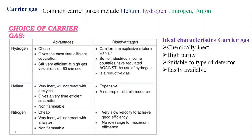The ideal characteristics of a carrier gas: it should be chemically inert, so it will carry the analyte toward the column without reacting. The carrier gas should have high purity and be suitable for the type of detector used. In GC, we have different types of detectors, and we use certain carrier gases only with certain detectors.